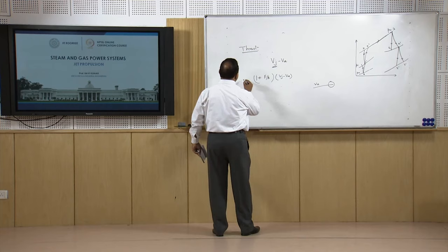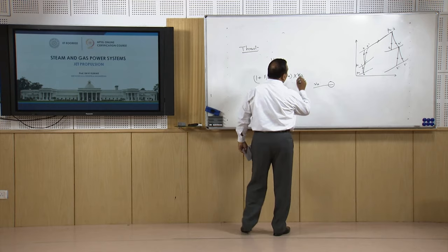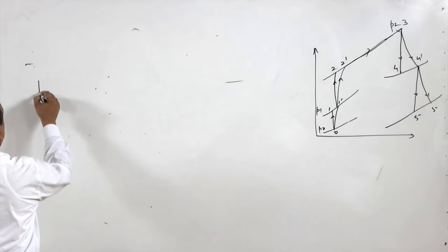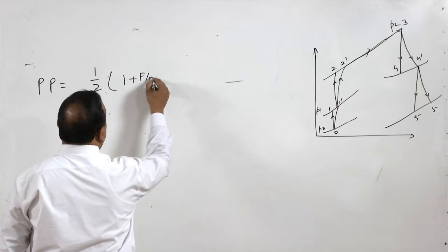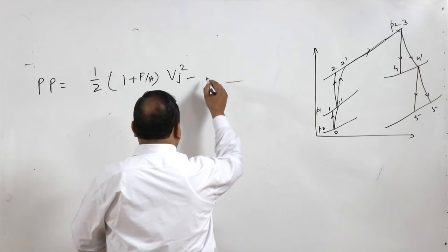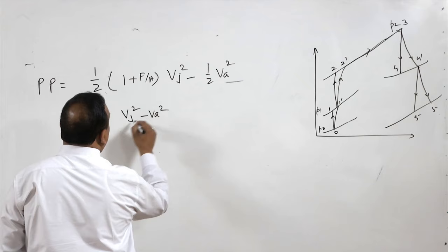Thrust power is the thrust multiplied by V_A. Another term is propulsive power, which is the change in kinetic energy: ½(1 + F/A)·V_j² − ½·V_A². If we neglect the fuel mass term, this simplifies to (V_j² − V_A²)/2.